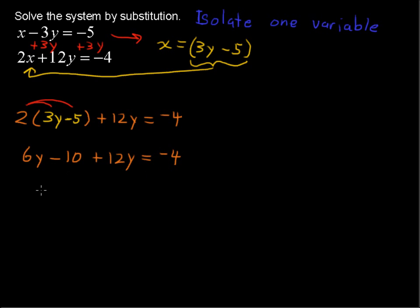Let's combine like terms and you get 18y minus 10 equals negative 4. Add 10 to each side and you get 18y equals positive 6. Just to show that we added 10 to each side. And then let's divide by the coefficient to get y by itself. And then we get a value of y where y equals 1 third.